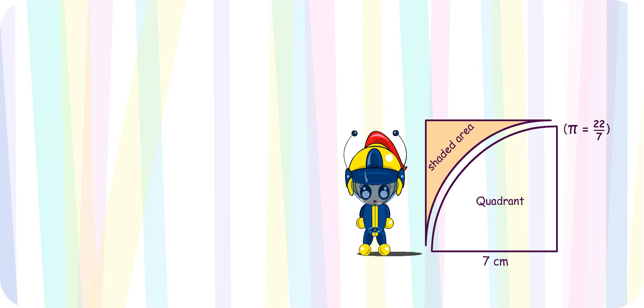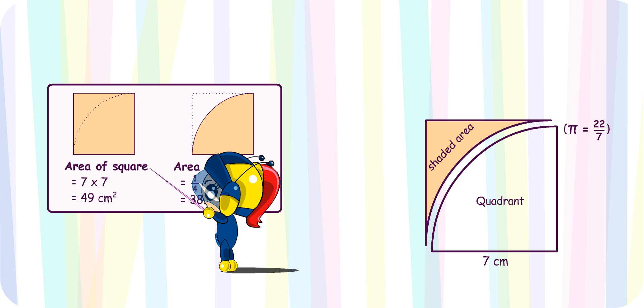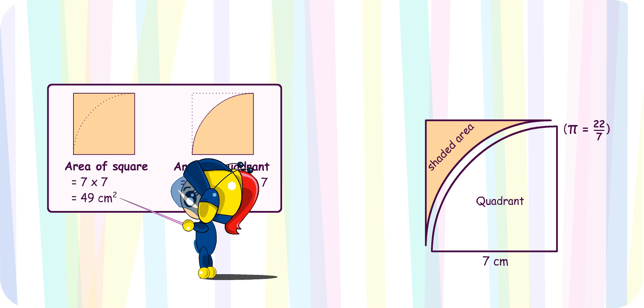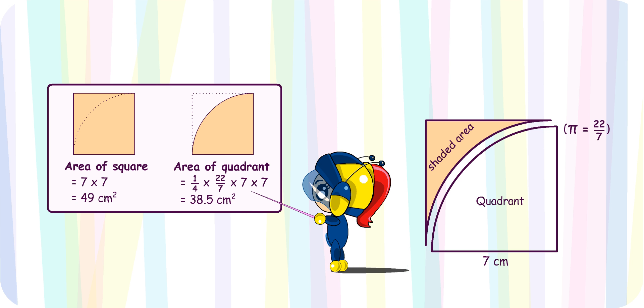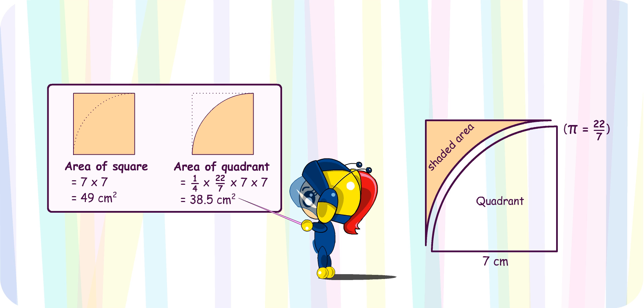Very well, Turbo Girl! Can you show us how it is done? The area of the square is 7 times 7, which is 49 cm². The area of the quadrant is 1 quarter times 22 over 7 times 7 times 7, which gives 38.5 cm².